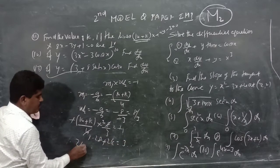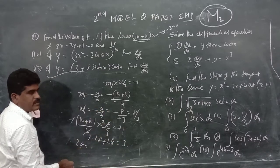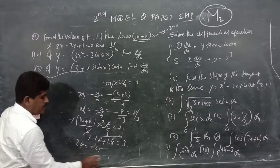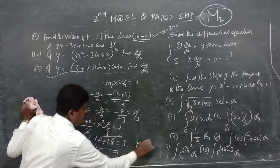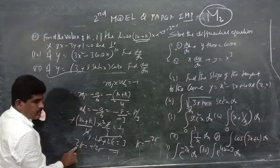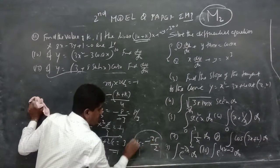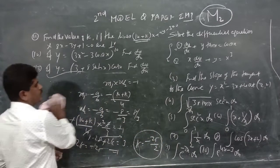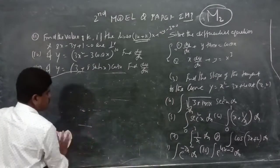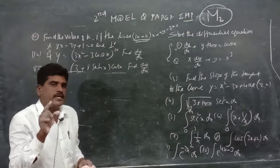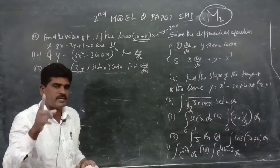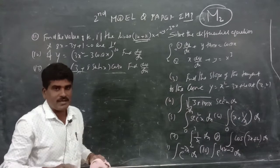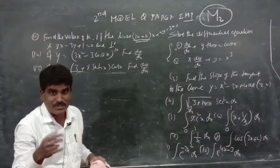Applying the condition: (14 plus k)/4 times 8/3 equals minus 1. Simplifying: 2(14 plus k)/3 equals minus 1, giving 28 plus 2k equals minus 3. Therefore 2k equals minus 31, wait — 2(14 plus k) equals minus 3, so 28 plus 2k equals minus 3, giving 2k equals minus 31 — but the instructor obtains 2k equals minus 25, so k equals minus 25/2. When two lines are parallel, M1 equals M2.